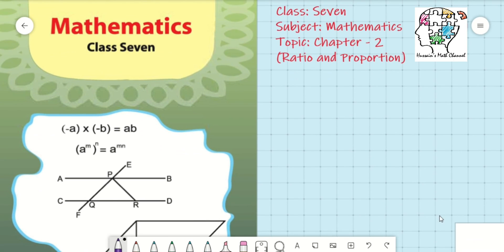What is ratio? In your previous level of education, that means in class 6, you already know what a ratio is. Simply, a ratio is a fraction where we can write two numbers with a colon — say three is to five. So this is a ratio of two numbers.